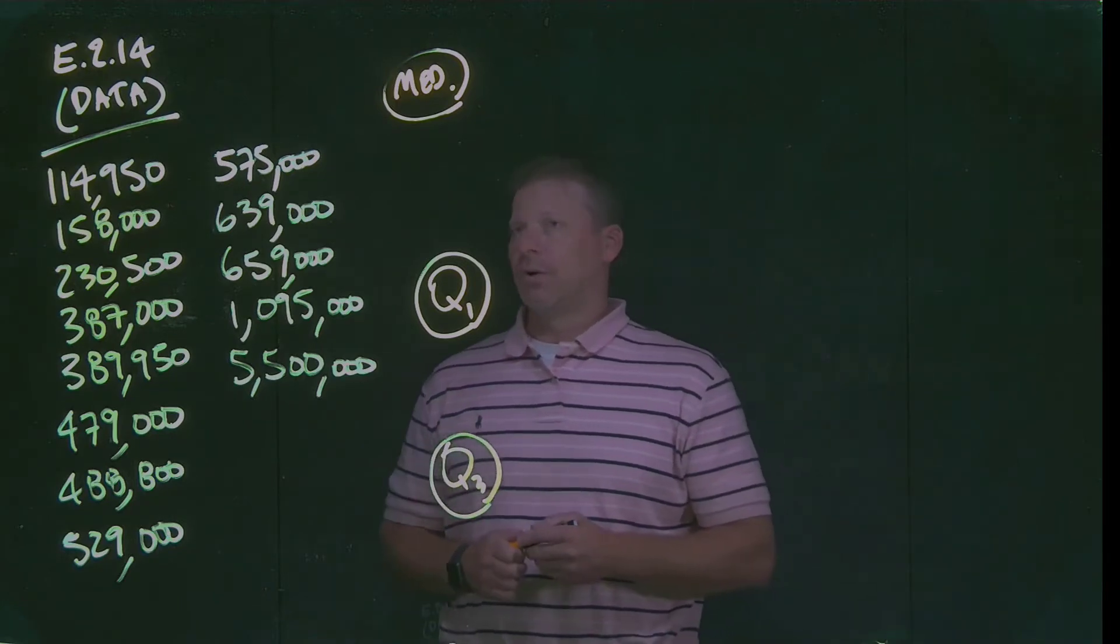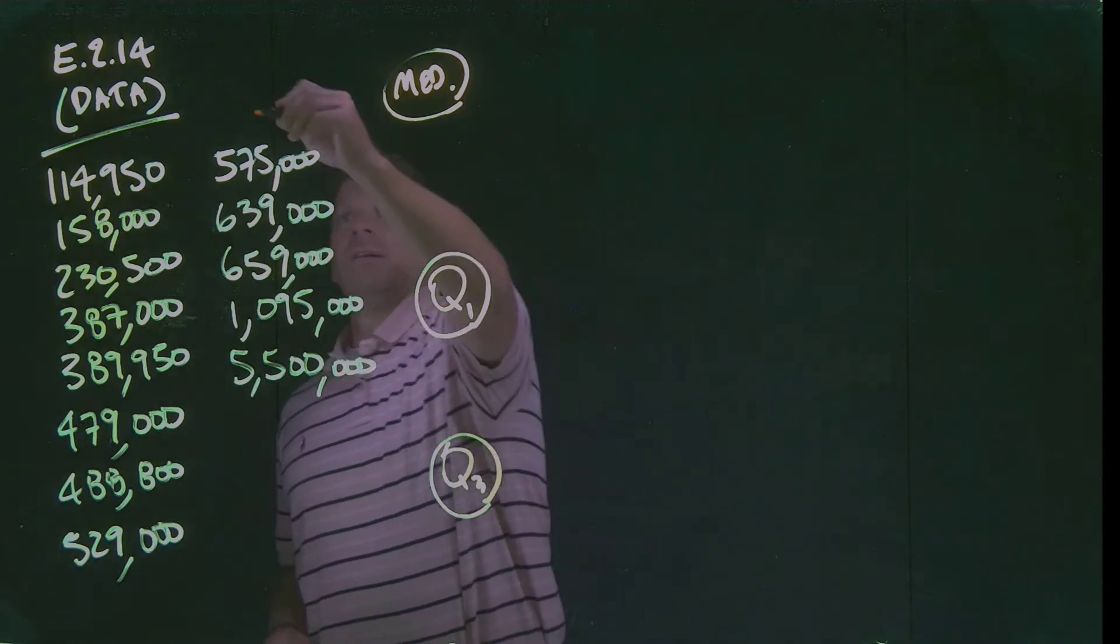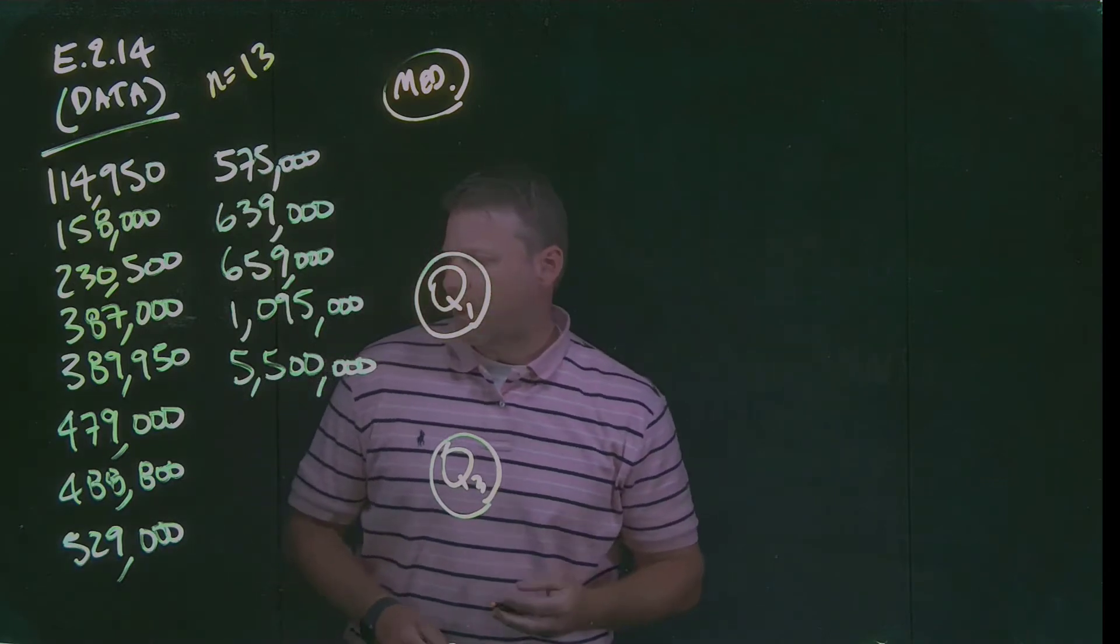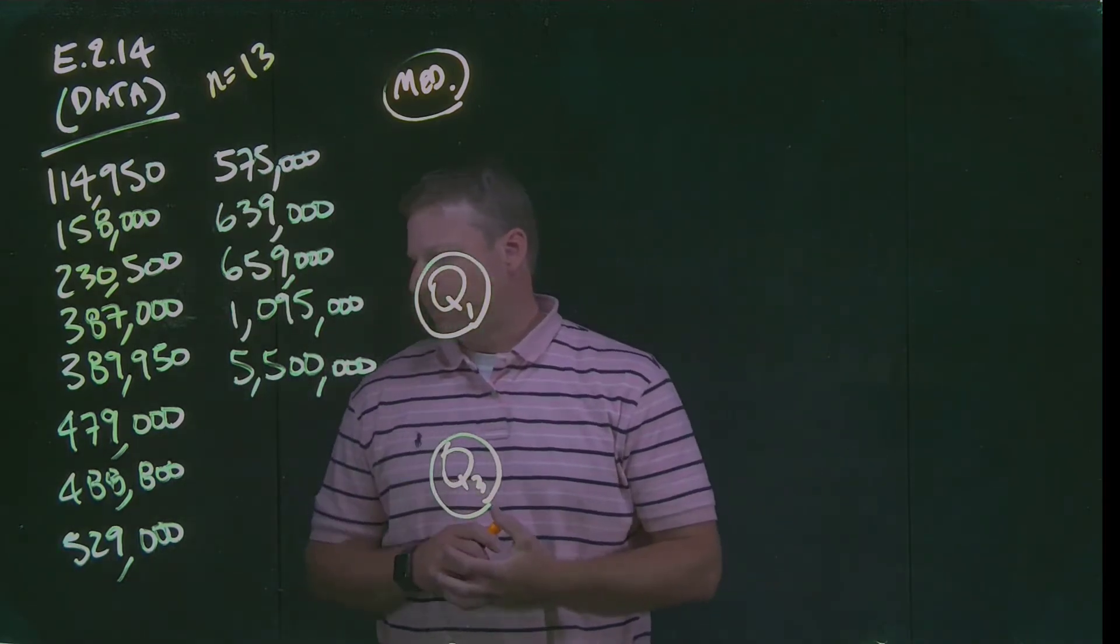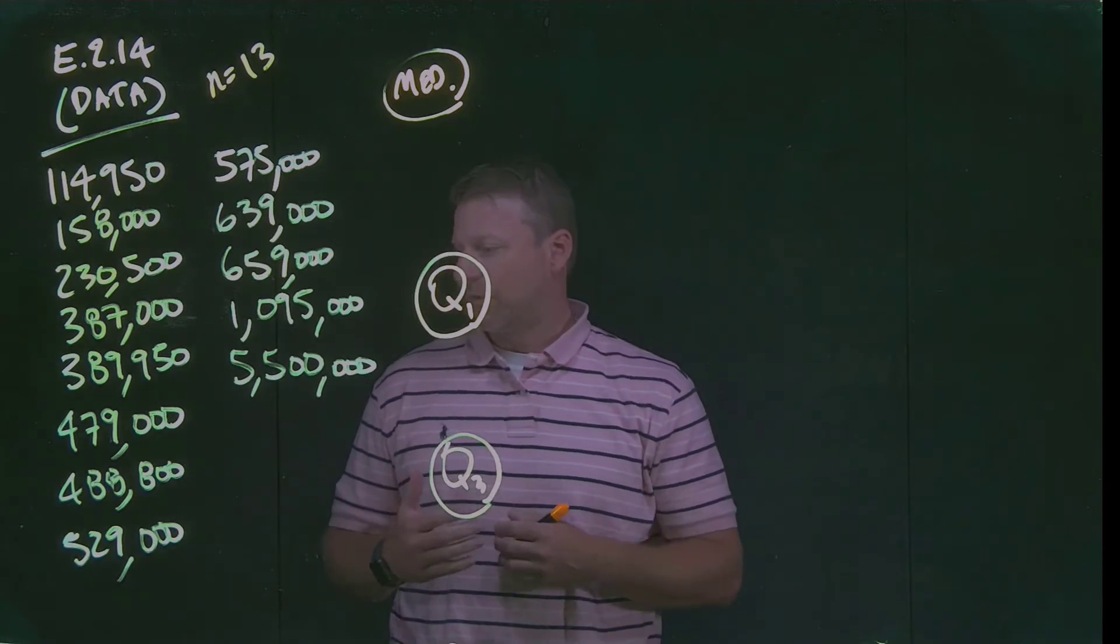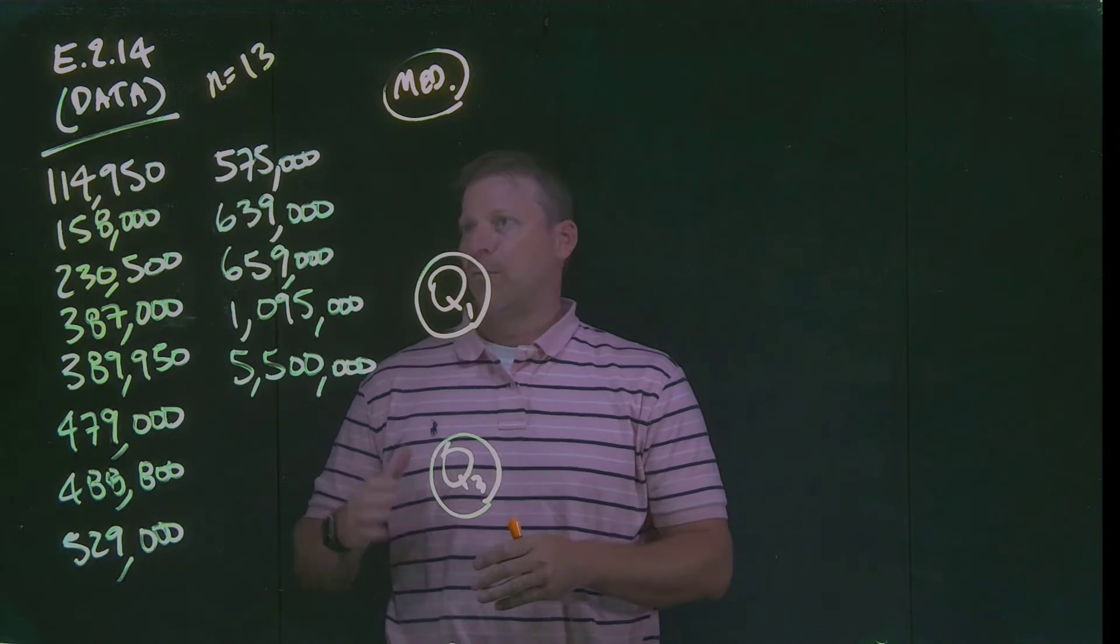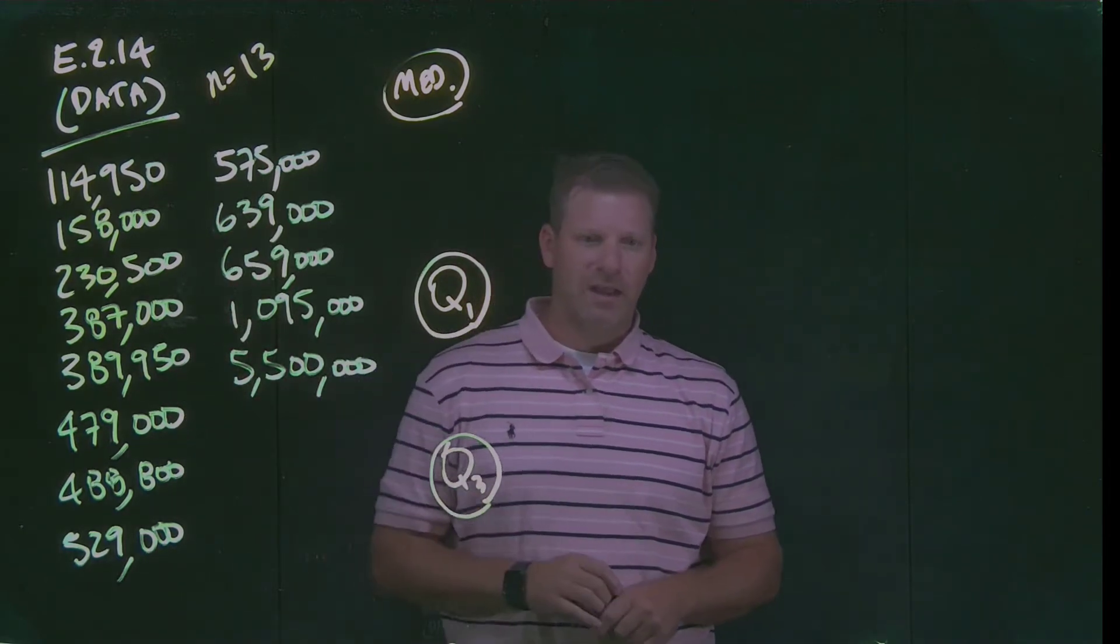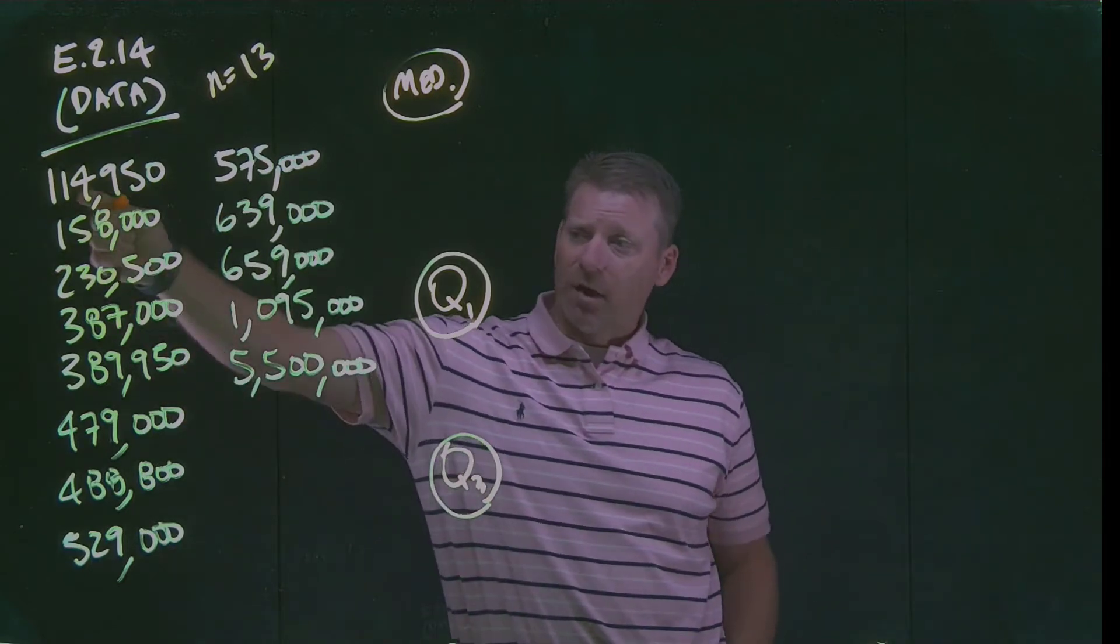In terms of the median, the median is the value in the center. In this case, we've got the 13 data points from our textbook, example 2.14. It basically reads, for the following 13 real estate prices, calculate the IQR and determine if any prices are potential outliers. Prices are in dollars. Originally, those are not in order. If we want to look at any percentile values, we need to first place them in order. In this case, lowest to highest.